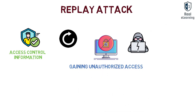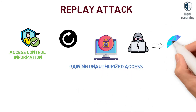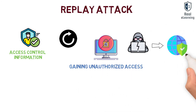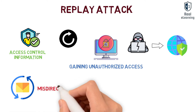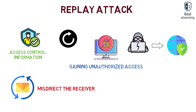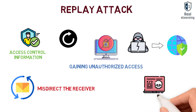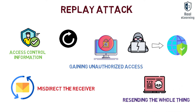It occurs when a cybercriminal eavesdrops on a secure network communication, intercepts it, and then fraudulently delays or resends it to misdirect the receiver into doing the desired outcomes. The attack could be successful simply by resending the whole thing.